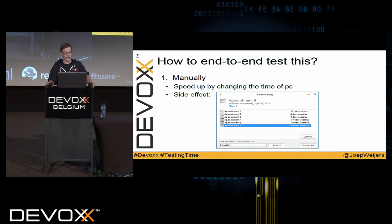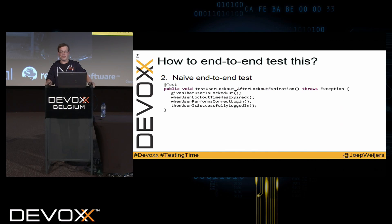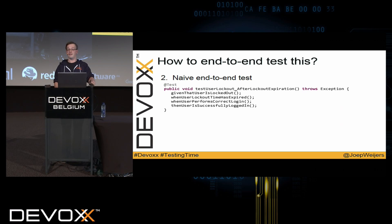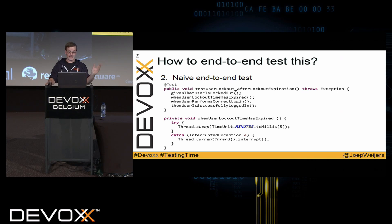At Topdesk we like to deliver quality code continuously, so we're not going to do manual testing. I'll grab Selenium and write an end-to-end test using the given-when-then format. Given that we start the application and make sure the user is locked out by logging in three times with incorrect credentials; when the five minutes have expired and the user uses the correct login; then he should be successfully logged in. We can do a naive implementation and just sleep five minutes — this might be valid if you run your end-to-end tests once per day during the night and don't care how long they take.